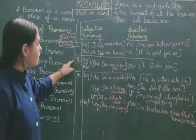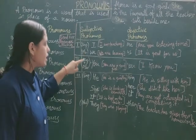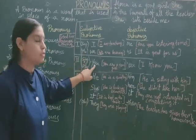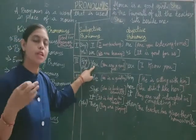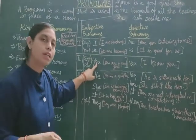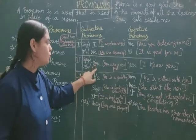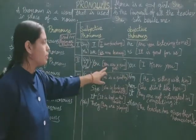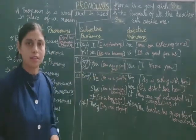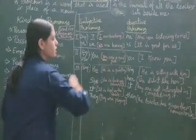In second person, both singular and plural use 'you' as the subjective pronoun. You dono ke liye use hota hai — singular ke liye bhi aur plural ke liye bhi. For example, 'You are a good girl', where you is the subject.